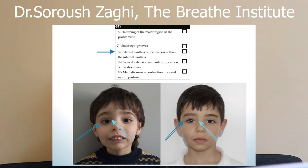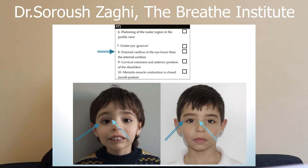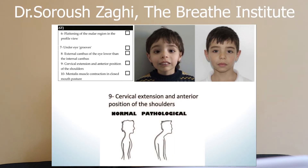Then we have the external canthus of the eye being lower than the internal canthus. Basically, the eyes should be more or less horizontal, but with craniofacial abnormalities, the eyes will slant downward slightly. Another sign, discussed in a previous video, is forward head posture — and it's not just that; it also includes rounded shoulders.